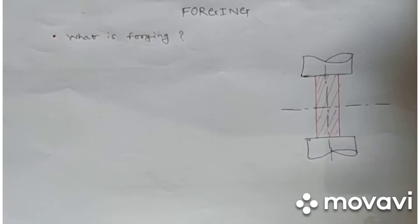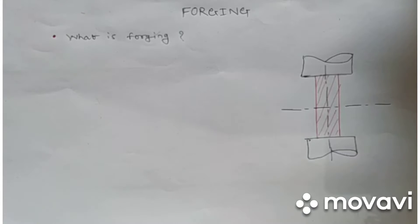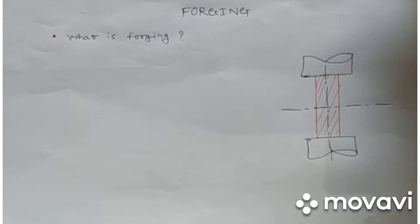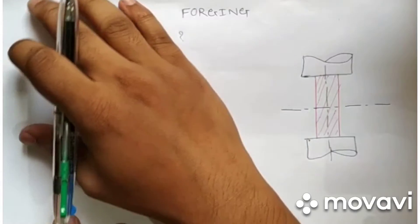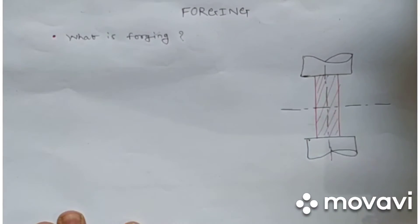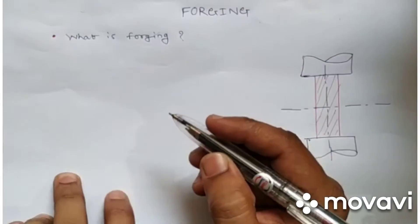Hello and welcome to our channel Intro Mech. We are discussing metal forming processes. Previously we have covered the rolling process, wire drawing process, and extrusion process. Now we will look at the forging process — what is forging and what is its main advantage.